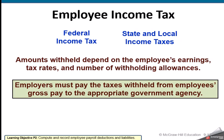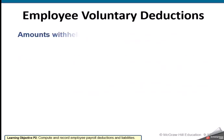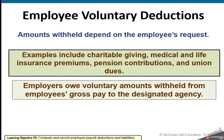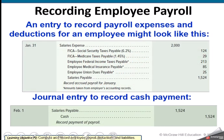Federal income tax and state and local income taxes are not matched by the employer. The employer holds them out of the employee's earnings and remits them to the proper taxing agency. Other voluntary deductions can include charitable giving, medical and life insurance premiums, pension contributions, 401(k) contributions, union dues, and uniform fees — there's a variety of different things that could come out.